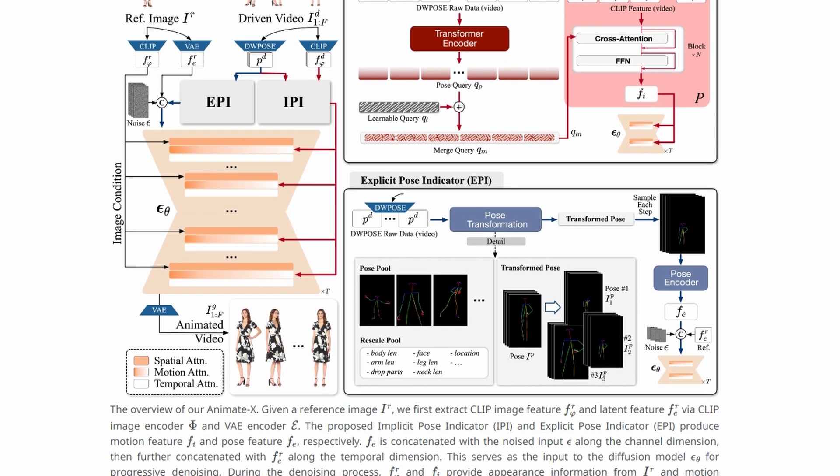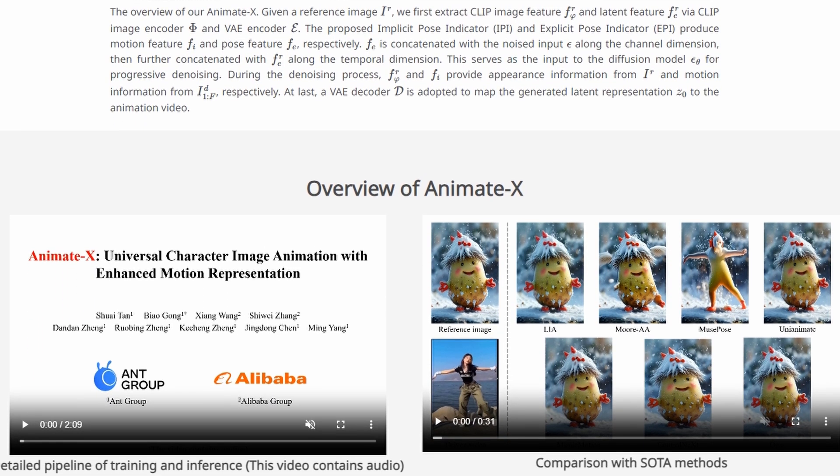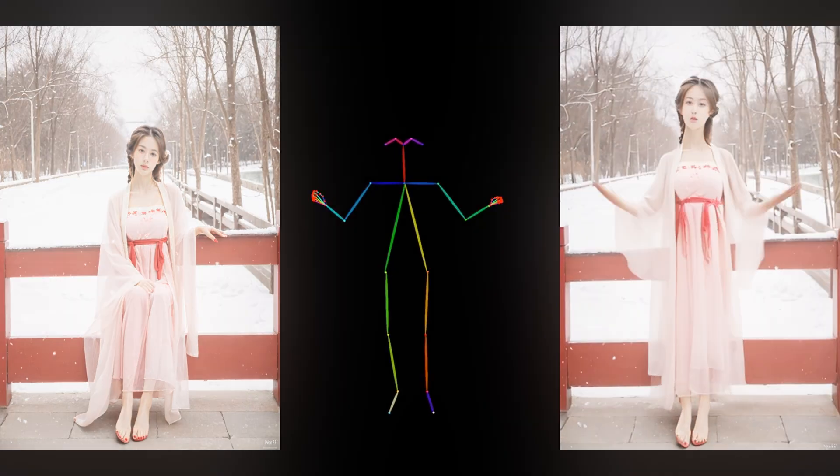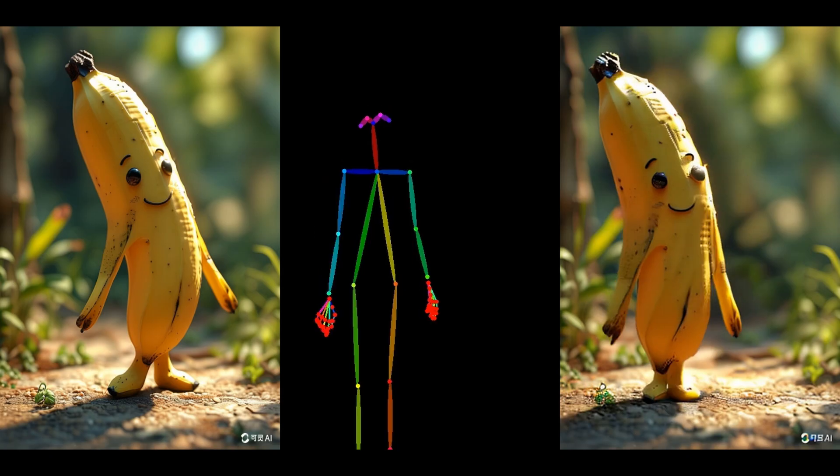This could be the future of animation. No longer will you need expensive motion capture technology or complex 3D modeling tools. Instead, you can simply record yourself or someone else performing the movements, and Animate X will map those motions onto your character.